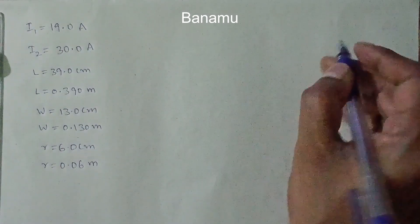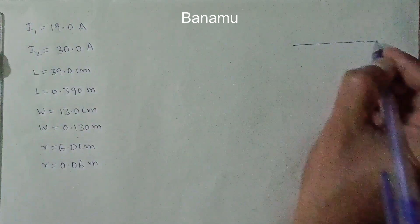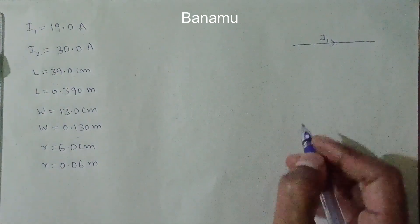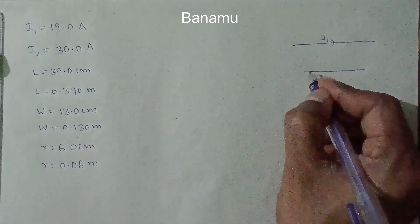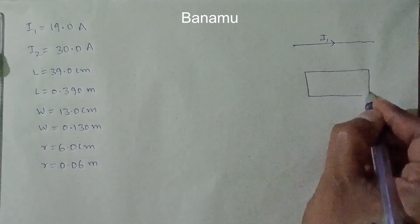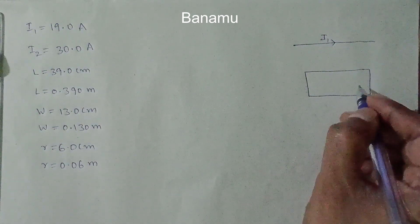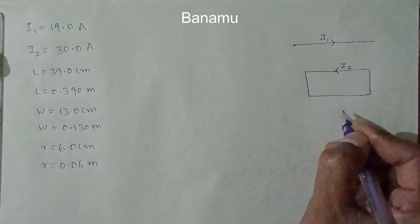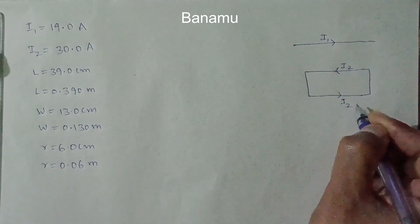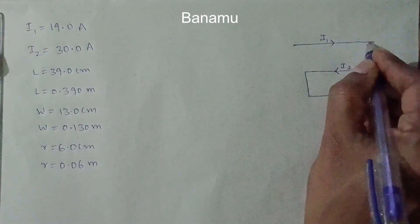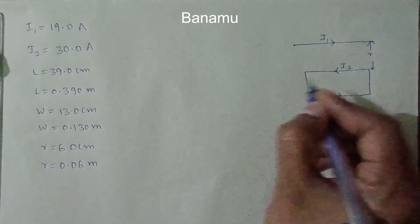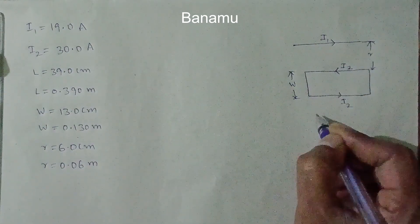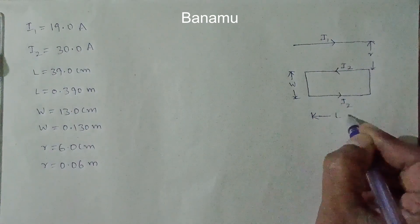From the figure, consider the wire — the current through the wire is I1 and its direction is towards the right. The rectangular loop carries current I2 in the counter-clockwise direction. The distance from the wire to the loop is R, the width of the loop is W, and the length of the loop is L.